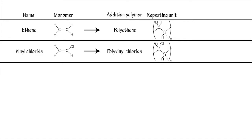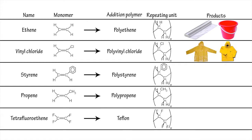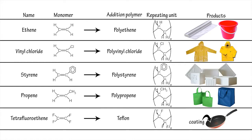Polythene is the simplest of a range of thermoplastic polymers that can be created by addition polymerisation by varying the monomeric starting units. Vinyl chloride gives rise to polyvinyl chloride, styrene to polystyrene, propene to polypropene and tetrafluoroethene to Teflon.